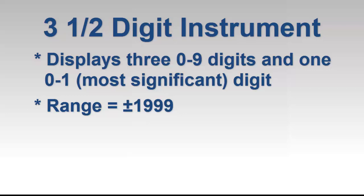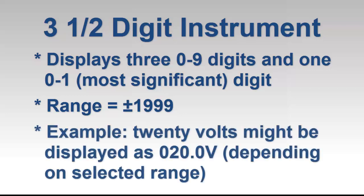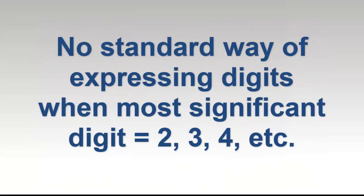For instance, a reading of 20 volts could be displayed as 020.0 volts, with a decimal point shifted one digit to the right. This is further complicated when the most significant digit can be numbers other than zero or one. There is no uniformly adopted standard for expressing this as a fraction. For example, a three-and-three-quarter-digit multimeter typically refers to an instrument whose most significant digit can be zero, one, or two. But this fraction is also used on occasion for instruments that can display three, four, or five as the most significant digit.